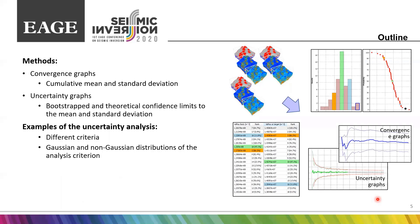For Gaussian distributions, we look at more traditional convergence graphs of cumulative mean and standard deviations. The second approach, called uncertainty graphs, uses bootstrapped and theoretical confidence limits to the mean and standard deviation. The methods are applied to ranking results calculated for a set of realizations. They are reliable for normal distributions of ranked results, so checking for Gaussianity is important. Depending on the ranking criterion, the results may vary — there is no single answer; the answer depends on the question.